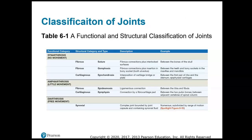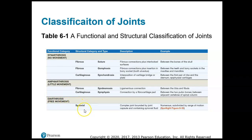Joints can be classified as synarthrosis, meaning no movement between the bones; amphiarthrosis, meaning little movement; or diarthrosis, which permits free movement. Diarthrosis is the functional category, whereas structurally we call it a synovial joint. A synovial joint is always a diarthrosis joint — it's always synovial and it permits free movement, like our knee, hip, shoulder, elbow, and finger joints.